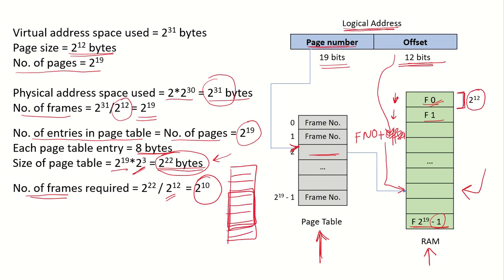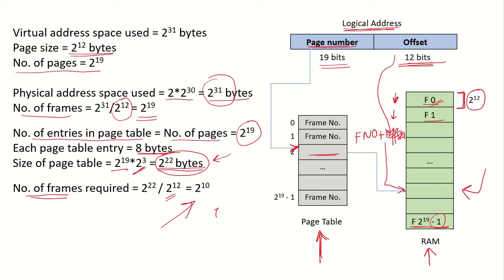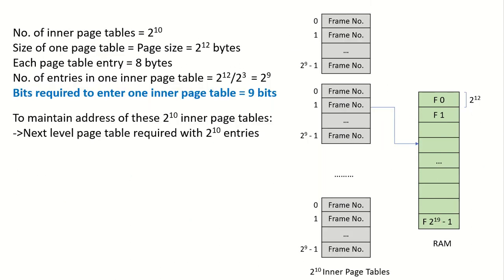If the frames are consecutive, the page table can fit there. But as we discussed, it is very difficult to find 2^10 consecutive frames. So instead, we break this page table into multiple frames, and these frames can be in different parts of main memory. We required 2^10 frames, so in each frame we keep one part of the page table.